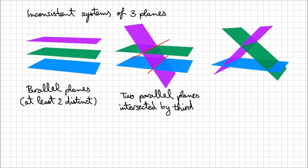The last situation we can encounter for inconsistent systems of three planes is when the planes intersect in pairs, just like in this last sketch. Any two planes intersect on a line of intersection, but there isn't any point for the intersection of all three planes.